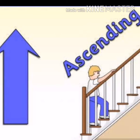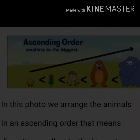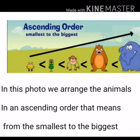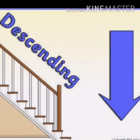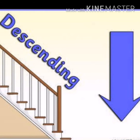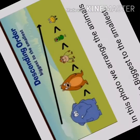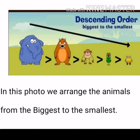Ascending order means that you arrange anything from the smallest to the greatest. In this photo, we arrange the animals in ascending order — that means from the smallest to the biggest.